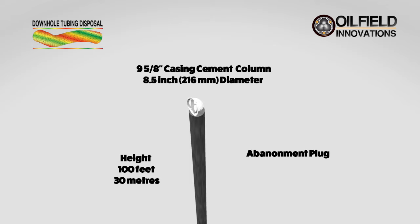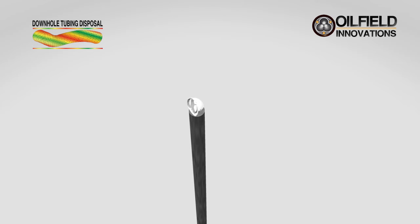Forming a good abandonment plug generally requires placing at least 100 feet or 30 meters of good cement.